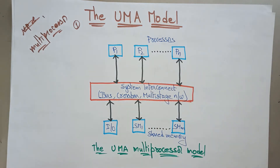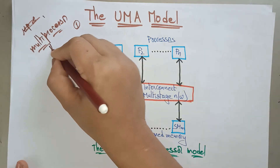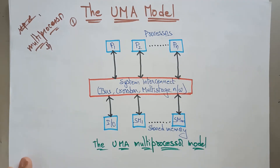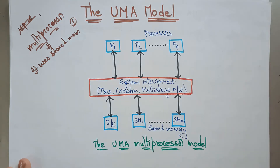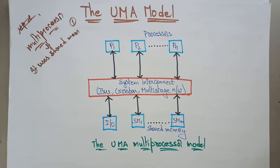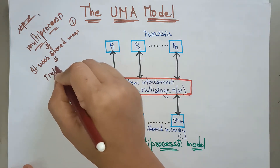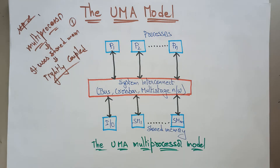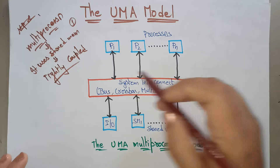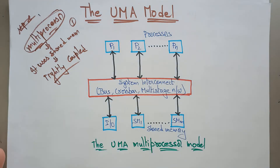In this video I am going to explain what exactly the UMA model is. Multiprocessor architecture means the first concept that everyone has to keep in mind is that it uses a shared memory concept. All processing elements use the same shared memory. This means the UMA model is a tightly coupled architecture.